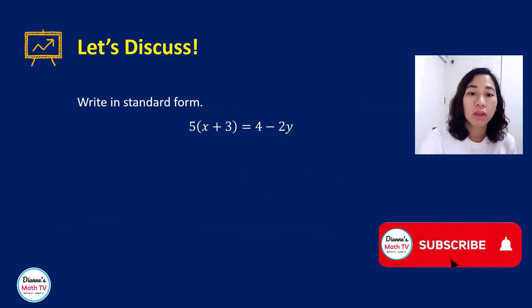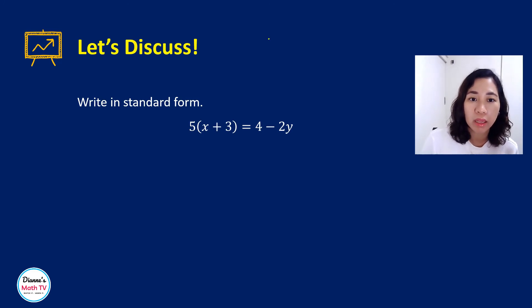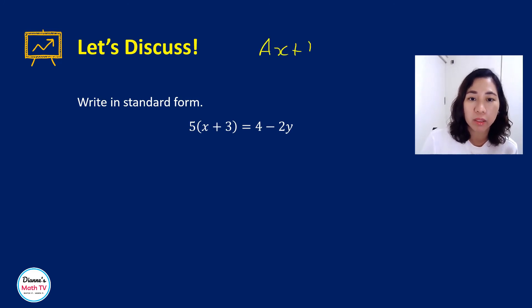One more. What do we need to do here? Our standard form: Ax plus By is equal to c. So to make that in that form, what do we do? We distribute. What is that? 5 times x is 5x plus 5 times 3 is 15, is equal to 4 minus 2y.